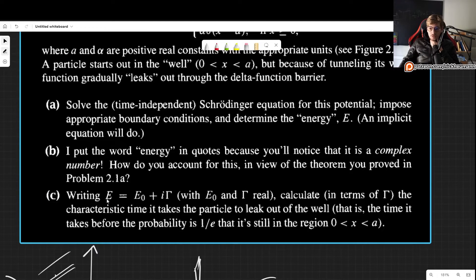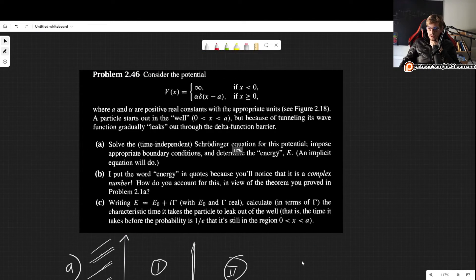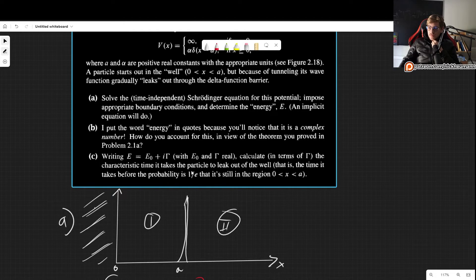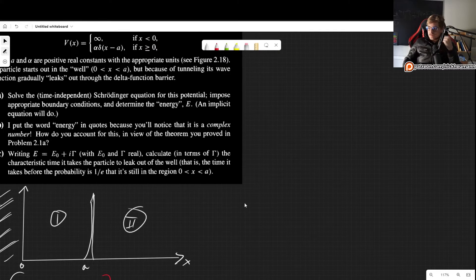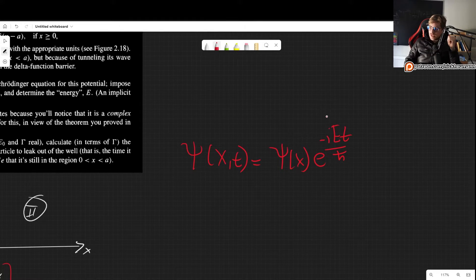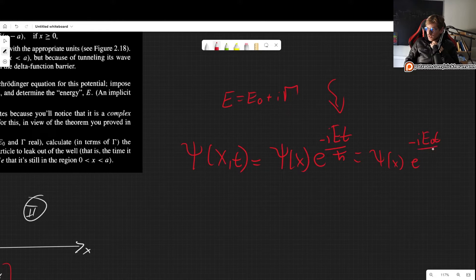And now part c tells us that we should write the energy as the sum of a real and a complex part. And we want to calculate the characteristic time it takes for the particle to leak out of the well. That is, the time it takes before the probability is 1 over e that it's still in the region between 0 and a. Okay, so let's write our wave function as a function of time, which is simply our wave function as a function of x times e to the minus i E t over h bar. We often forget about this part, the time dependence, because not many problems we encounter ask us to consider it. But just don't forget about it. Okay, and let's now write, of course, what E is. We know that E is E0 plus i gamma. That's what we are going to write in.